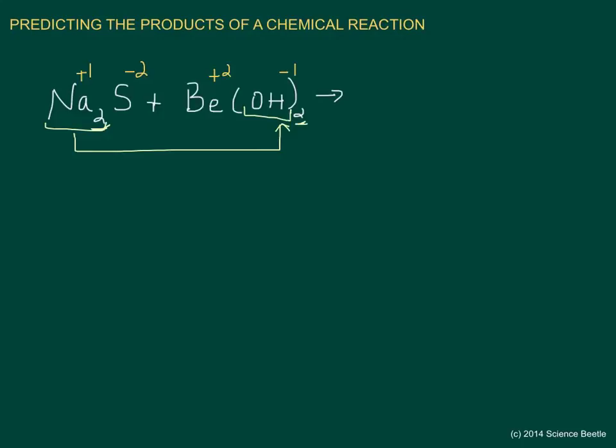What that gives us on the right hand side would be sodium combined with OH. Notice I'm not bringing over the subscripts simply because the subscripts are needed on the left hand side to balance out the neutral charge of the compounds. We're going to determine our own subscripts on the right hand side, but we need to do that after we've predicted the general atoms and how they combine. The second step is to go back to the second cation, which is beryllium, and it will combine with sulfur. So the second compound formed is beryllium with sulfur.